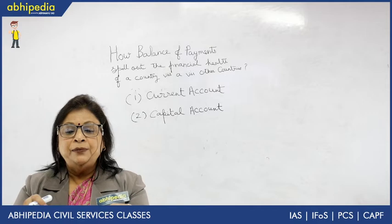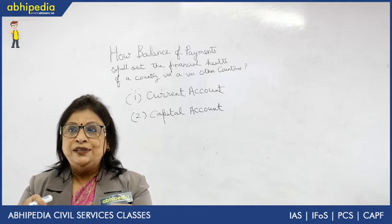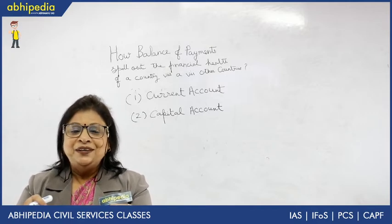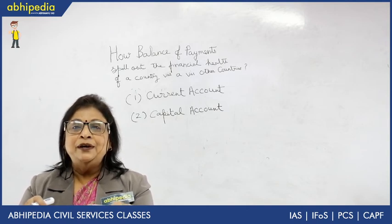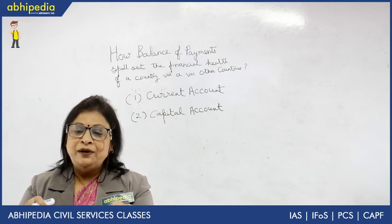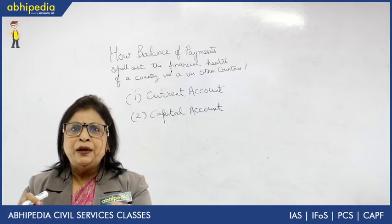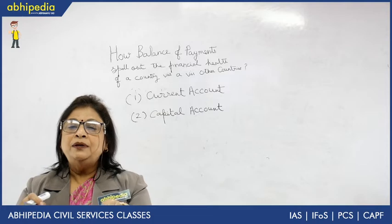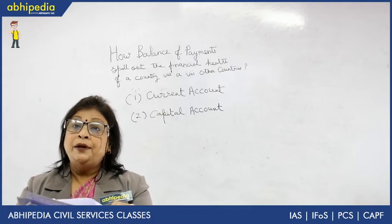Then, invisible items — these are services which you cannot see but are very important. Under invisible items, we have services rendered by commercial undertakings like shipping companies, insurance companies, and banks. These all come under the current account.